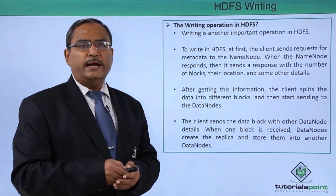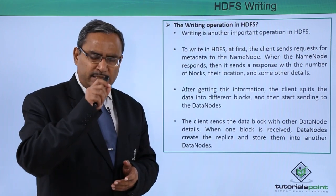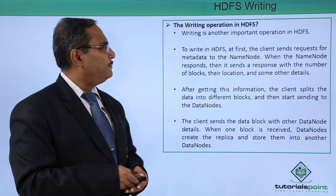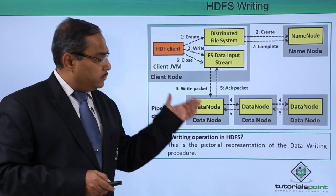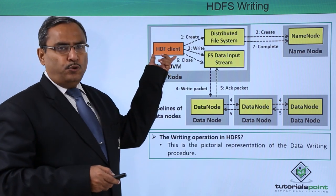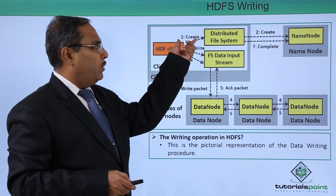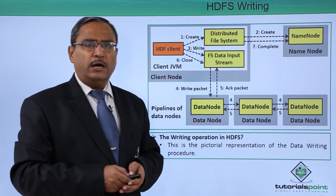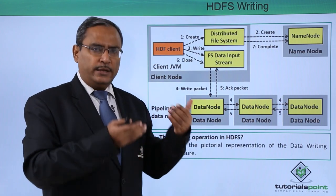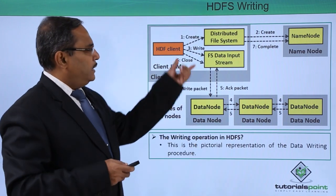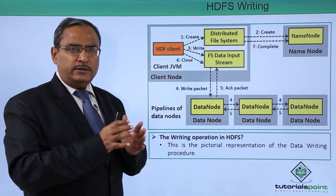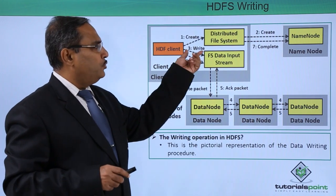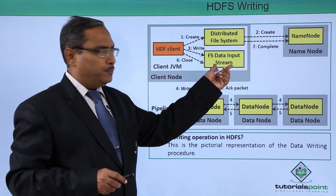Let us discuss this concept with a proper diagram showing 7 steps to perform an HDFS write. Step 1: the HDFS client puts a create request to the distributed file system. That request is made available to the NameNode, and the NameNode provides the required metadata for the writing operation. The HDFS client then divides its data into multiple different chunks and produces the write request to the FS data input stream — that is step 3.